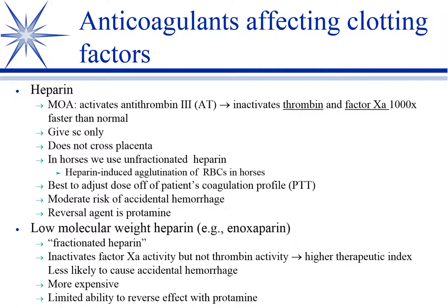Heparin has been around for ages. It actually activates antithrombin 3 to promote normal anticoagulant effects in the body, which in turn inactivates thrombin and factor Xa. So you take the normal anticoagulant factors and amplify them about a thousand-fold by giving heparin. Never give it IM — you're too likely to get a hematoma. We give it sub-Q with a very small needle. It's one of the few drugs that doesn't cross the placenta, so if a dam needs an anticoagulant and you don't want to risk the fetus, heparin is unique in that regard.